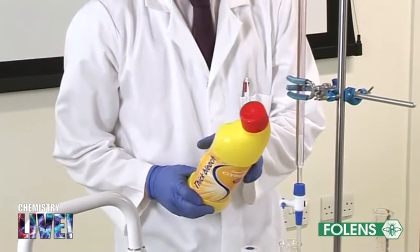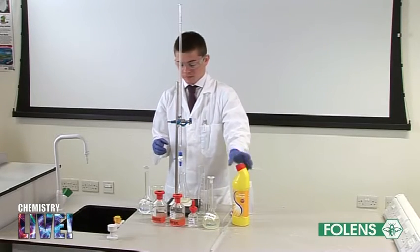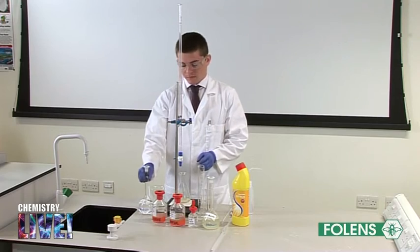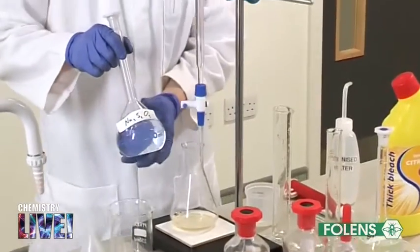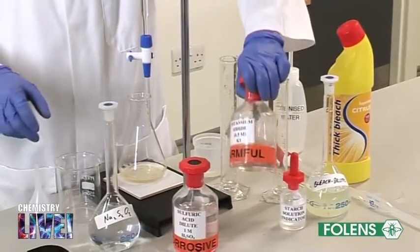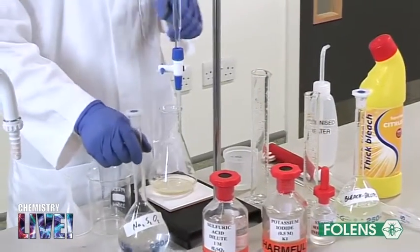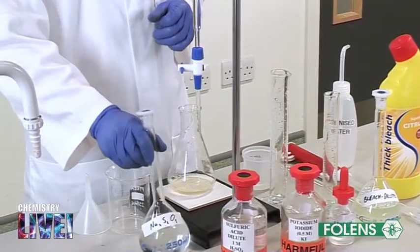To determine the strength of household bleach, a sample of the bleach is reacted with a solution of iodide ions in the conical flask. The iodine formed is then titrated against a solution of sodium thiosulphate of known concentration.